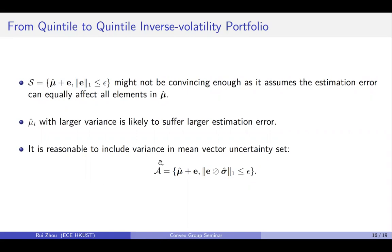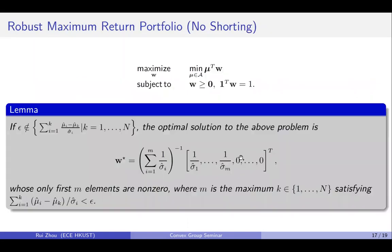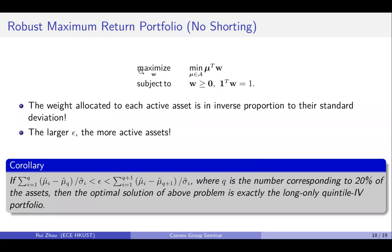Like here, we will replace the original uncertainty set by this one, and we use this new uncertainty set in the robust maximum return portfolio. And then something magic happens. The optimal solution becomes this. So still, only first m elements are non-zero and others are inverse proportion to the standard deviation, and this m is maximal k decided by the uncertainty level epsilon.